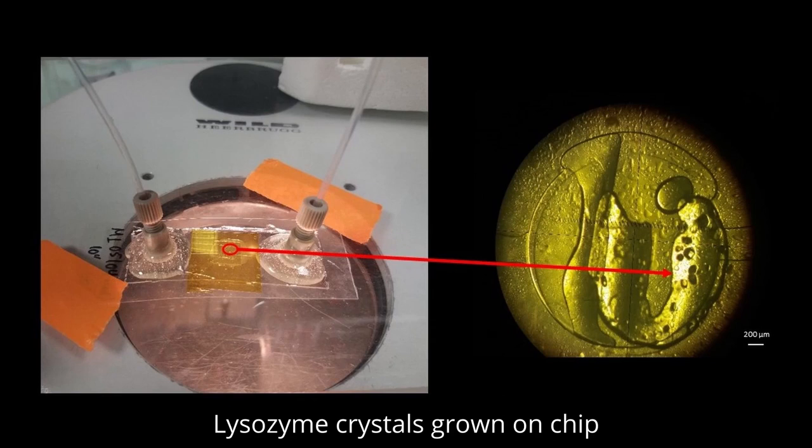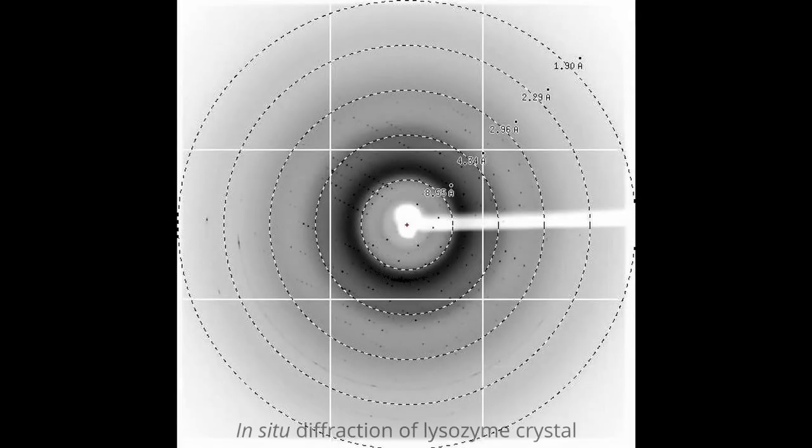Moreover, our microchips use microdialysis for protein crystallization, which is a diffusion-based method aiming to equilibrate the precipitate concentration through a semi-permeable membrane in order to approach the optimal concentration for protein crystallization.